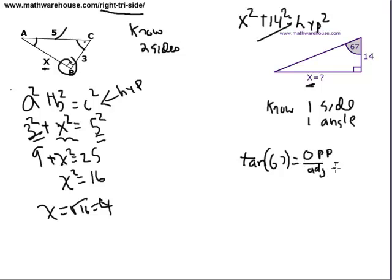Tangent of 67 equals the opposite. Just remember tangent equals opposite over adjacent. And that's going to be x over 14.